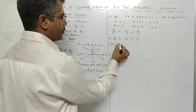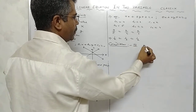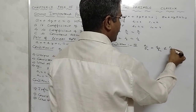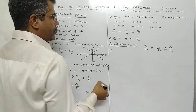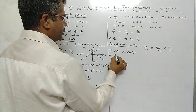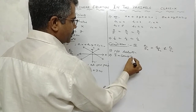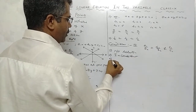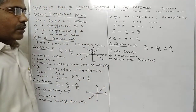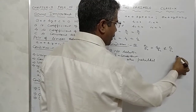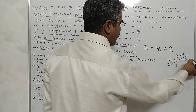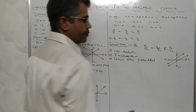Condition three: when a1 upon a2 equals b1 upon b2, but is not equal to c1 upon c2 — no solution, inconsistent. The lines are parallel. The graph of this condition shows lines parallel to each other on the x-axis and y-axis.